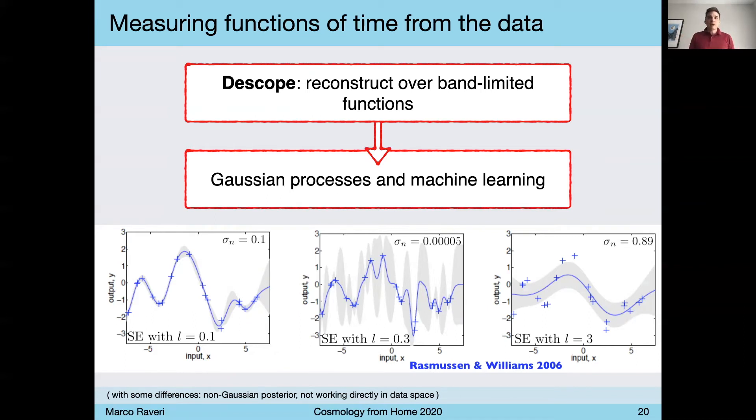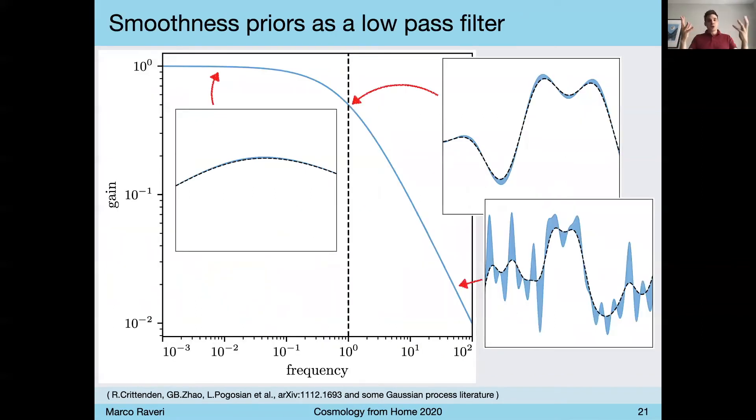So people have worked out how to work with this generalization of Gaussian processes, and the key idea is to implement a smoothness low-pass filter prior on the space of the functions that we want to reconstruct. And I think this perfectly matches our idea on how physics should work in cosmology. We have this idea that physics has to go on the Hubble scale in cosmology, and this just makes it very precise. This turns it into a precise statement.